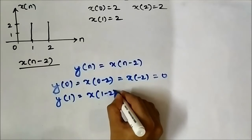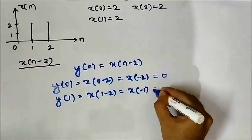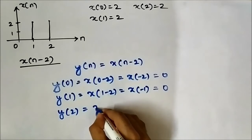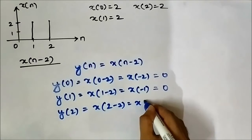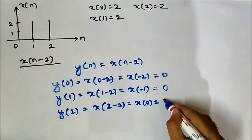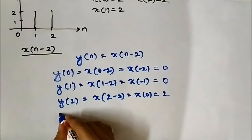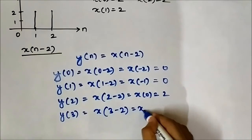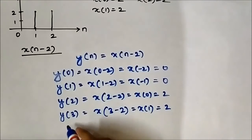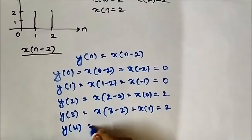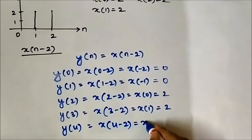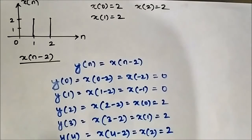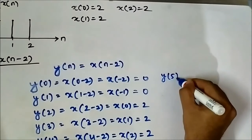At n=2: y(2) = x(2 − 2) = x(0) = 2, since x(0) equals 2. Similarly, at n=3: y(3) = x(3 − 2) = x(1) = 2. And at n=4: y(4) = x(4 − 2) = x(2) = 2.